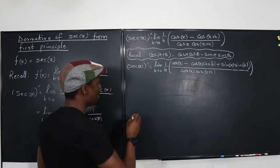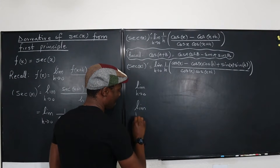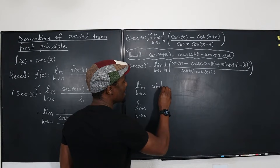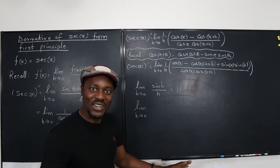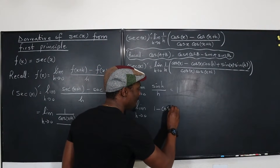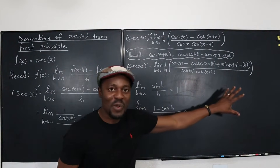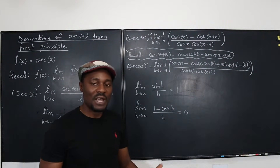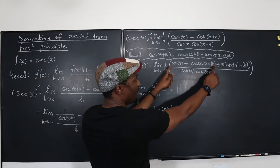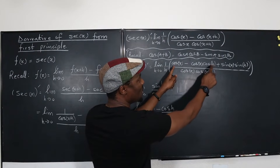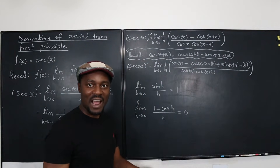What we're really looking for, since we're taking limits, are two key identities. The limit as h goes to zero of sine(h)/h equals one — we know that. And the limit as h goes to zero of (1 − cosine(h))/h equals zero. These two are essential for cleaning up definition-based derivatives. I want to factor things so I can create these exact expressions.